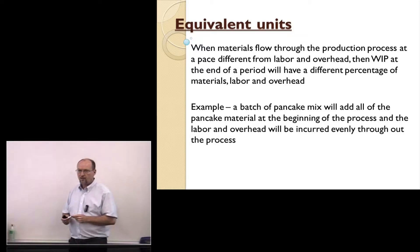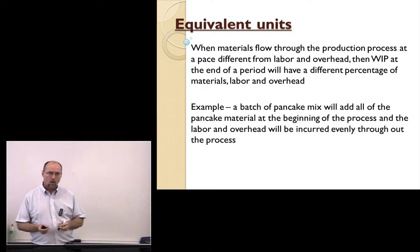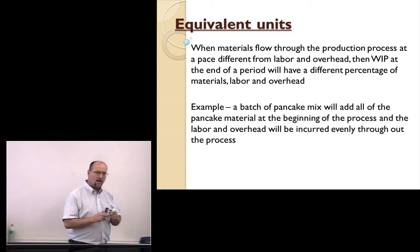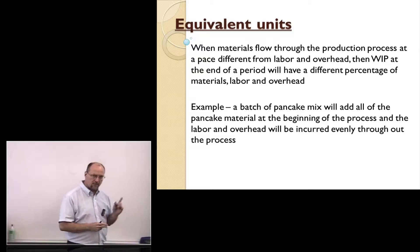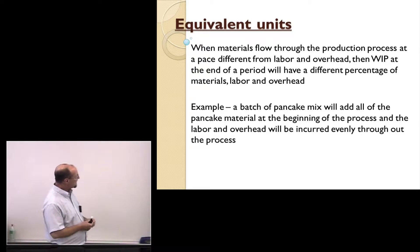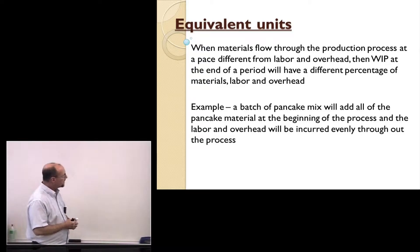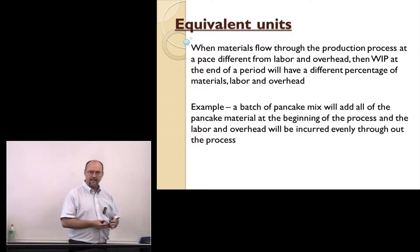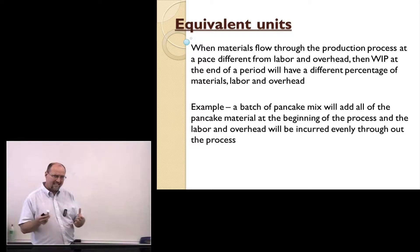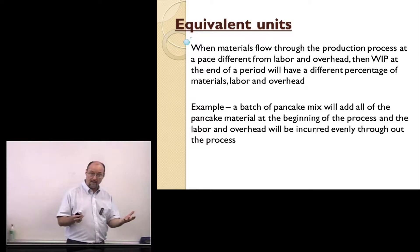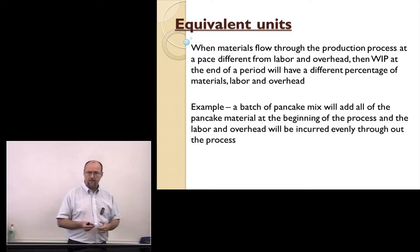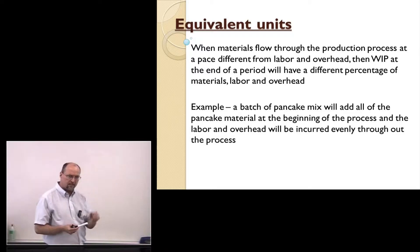One of the key concepts in process costing is the concept of equivalent units — equivalent whole units, or equivalent complete units, same thing. When materials flow through the production process at a pace that's different from labor and overhead, then work in process at the end of the period will have a different percentage of materials, labor, and overhead. We might have work in process that has 80% of its materials needed for the completed product, but only 60% of labor and 40-50% of overhead still needed.